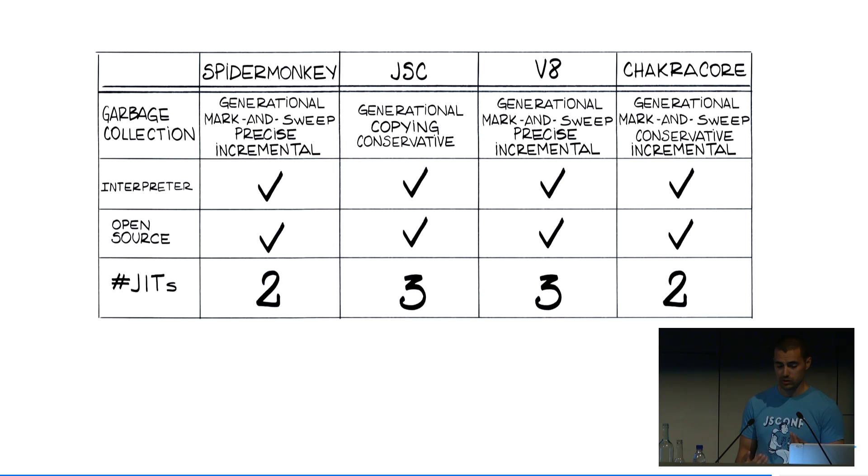Incremental GCs interleave their work with activity from the main program, while on the other hand, a stop the world strategy will halt the execution of the main program until a full collection is done. GCs can also be described as precise or conservative ones. Precise ones can identify all the references, while conservative ones will look for memory patterns to find references. Thus, the last approach could lead to false positives, but that's not always a problem in practice.